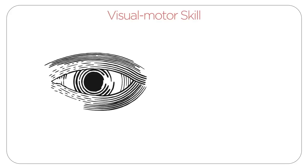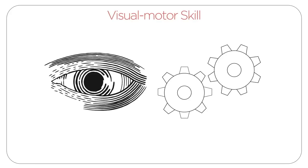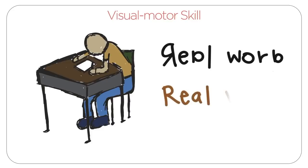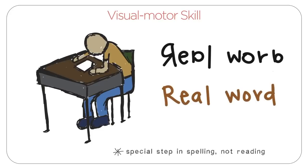A final aspect of learning to write a word is visual motor skill. Children learn to write by making marks on a page, typically with pen and paper. Eye-hand coordination is needed to ensure that the marks look like a real word. This is a special step involved in spelling, but not in reading.